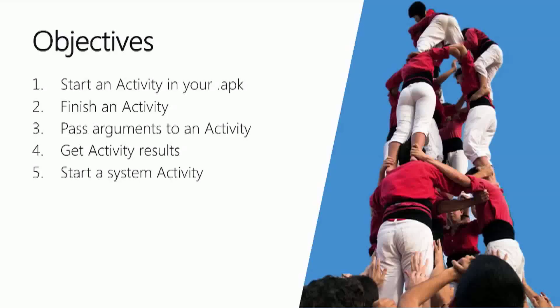A common way to describe an Android application is a collection of activities that work together to achieve the goals of the app — and that's the topic of this course. We're going to have an application with multiple activities where one activity starts another. When the started activity is done it calls finish to return control back to the original. We'll also talk about data flow — passing arguments when starting an activity, packaging return data, and starting an activity that's not part of our application, like the phone dialer or email compose activity.